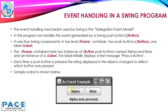By providing an implementation of the ActionListener, we will be implementing a method actionPerformed. And in that, we will be taking the proper action corresponding to each button. For the case of button alpha, we will display 'alpha was pressed' in the label. And when beta is pushed, we will display 'beta was pressed.' Let's see this in our program.